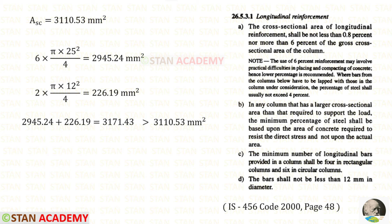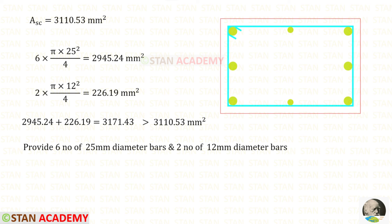But we have to follow some conditions. Let us open this book page number 48. The minimum number of longitudinal bars provided in a column shall be 4 in rectangular columns and 6 in circular columns. Our column is rectangular. The minimum number is 4 but we have kept 8 numbers. So here we are safe. The bars shall not be less than 12 mm in diameter. Our smallest diameter is 12. So there is no problem. We should not keep less than that. We can provide the 6 numbers of 25 mm diameter bars in this way. Add 2 number of 12 mm diameter bars here.